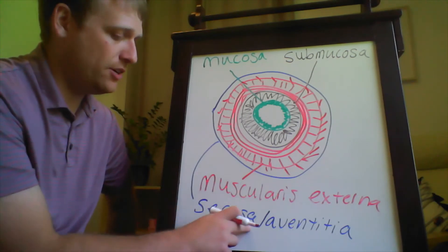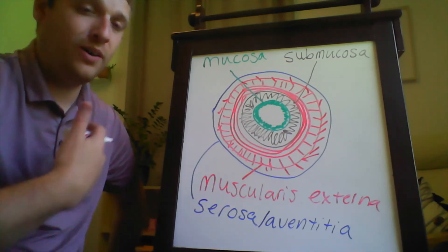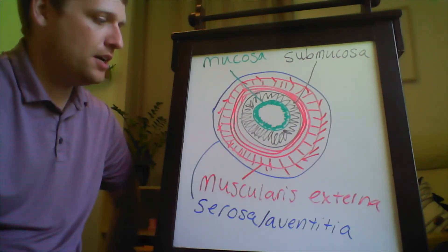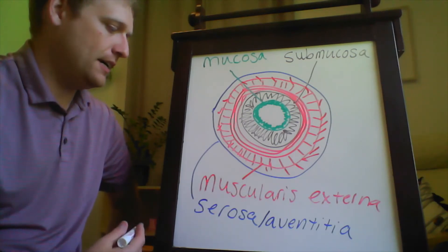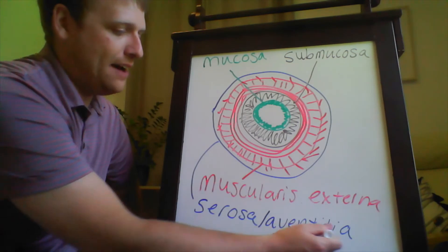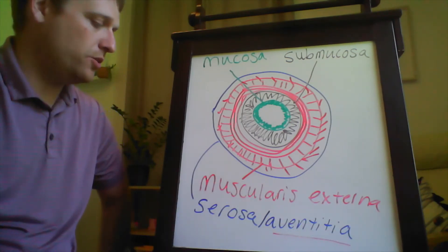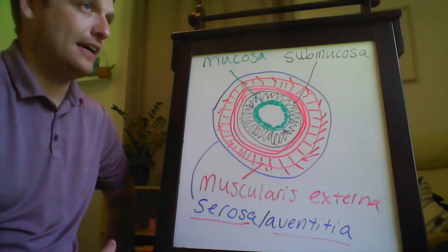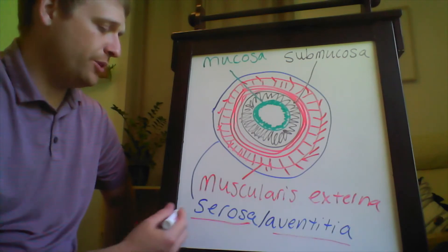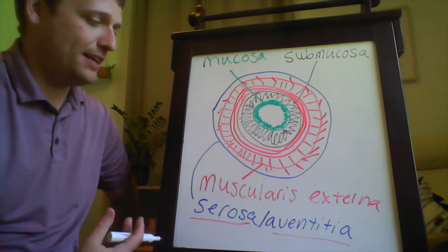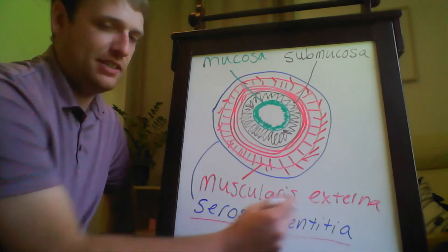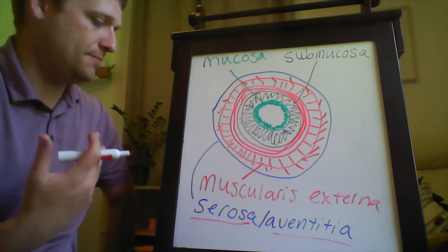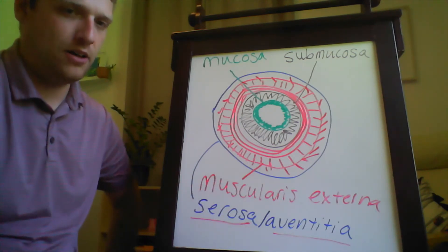This outermost layer is called the serosa if you're talking about an organ found inside the peritoneum. If it exists outside of the peritoneum, there's a different layer called the adventitia. So if it's within the serous membrane of the peritoneum, you refer to it as serosa; if it exists outside, it's the adventitia. These are the four primary layers of cells you'll find along the alimentary canal.